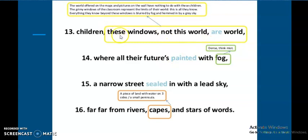'For these children these windows not this world are world, where all their future's painted with fog.' The poet is trying to not just literally bring in the idea of fog but also the idea of sadness. If you remember the lives of Mukesh and Saheb, the characters which we studied, you can find a lot of similarities over here. Lost Spring, that was the chapter.